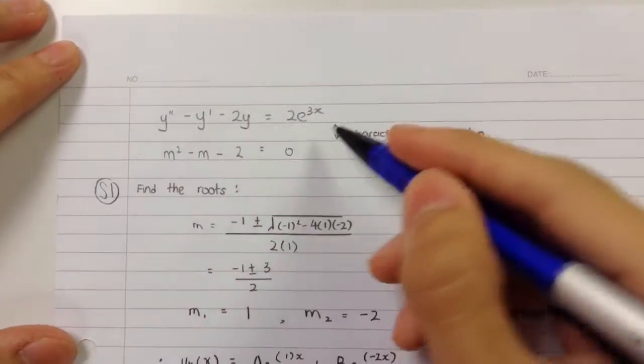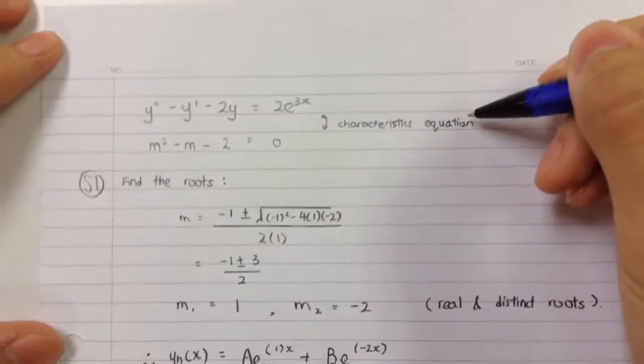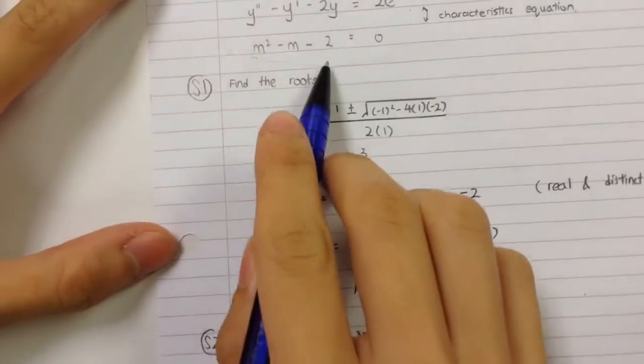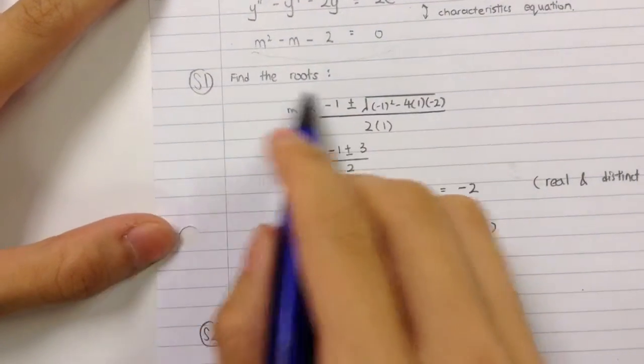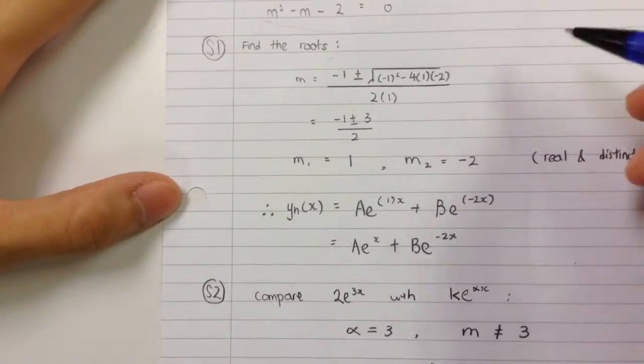This is the original equation. I find the characteristic equation. From this characteristic equation, I find the roots using the root formula.